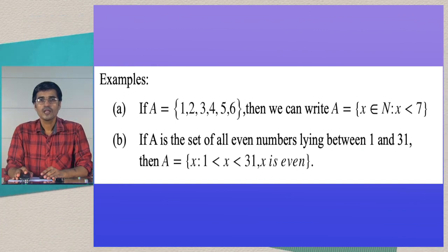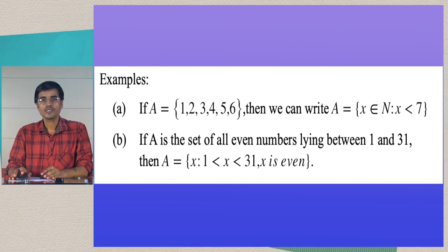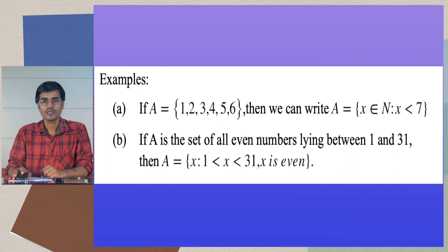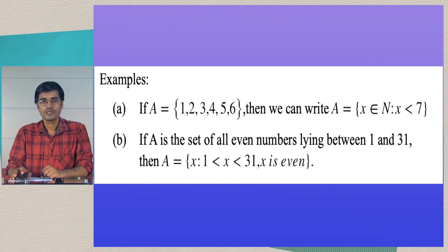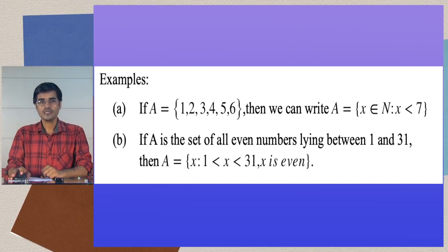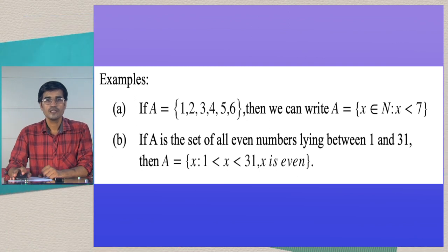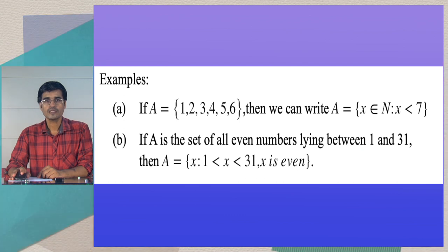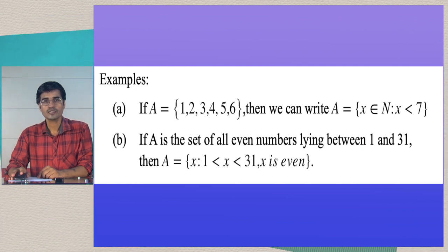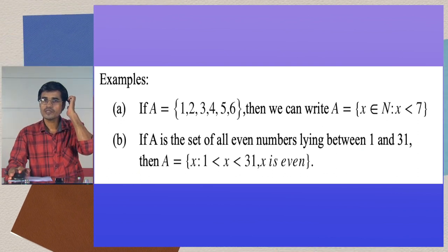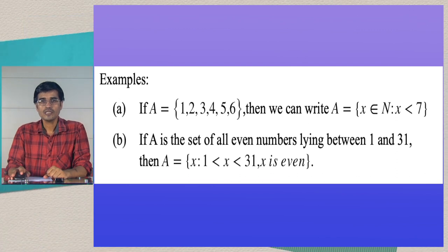Another example: A is the set of all even numbers lying between 1 and 31. The set of all even numbers between 1 and 31 can be written in set builder form as: A = {x : 1 < x < 31 and x is an even number}.